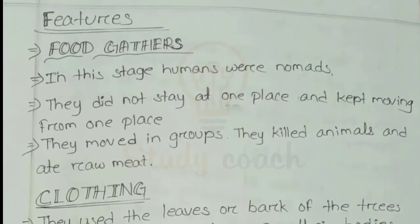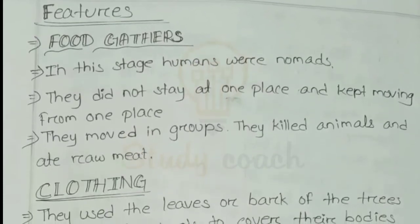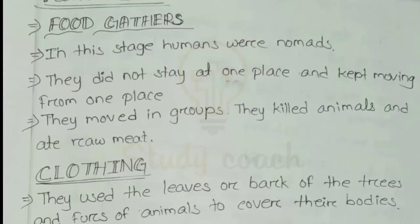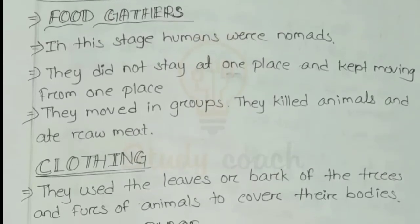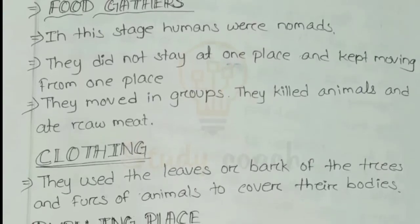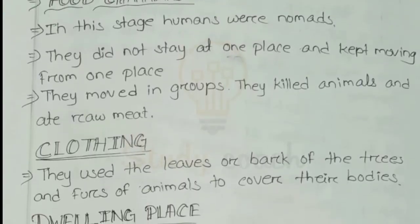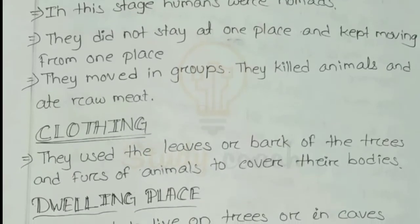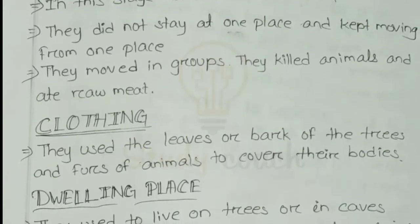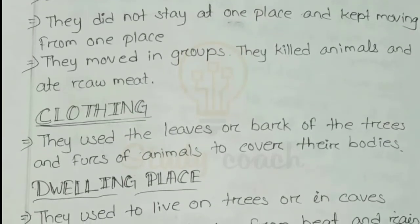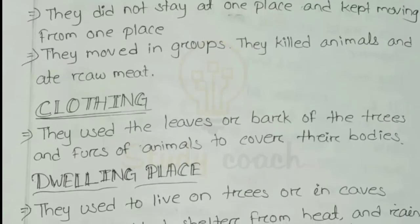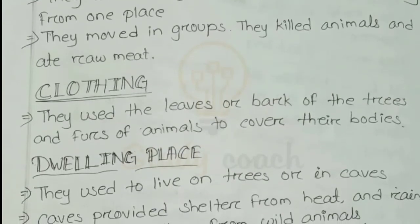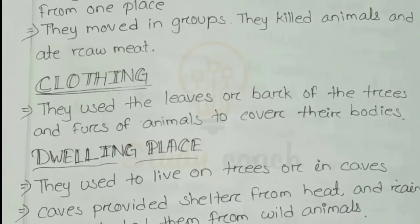What are the features of the Paleolithic age? First, they were food gatherers. In this age, humans were nomads — meaning people who move from one place to another in search of food or due to unfavorable weather conditions. They did not stay at one place and kept moving in groups. They killed animals and ate raw meat.